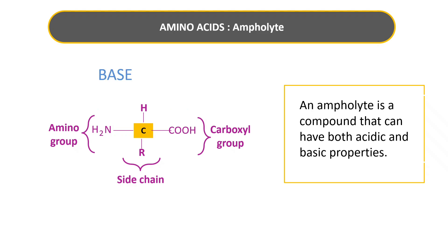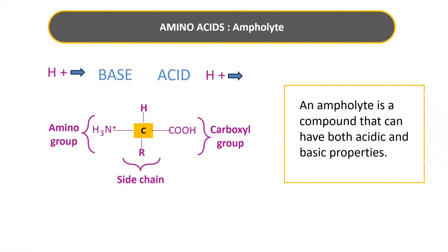A base is a molecule that accepts a proton, that is an H+ ion. Being basic in nature, the amino group of amino acid has a tendency to accept H+ ion and becomes NH3+. And an acid is a molecule that donates a proton, so the carboxyl group of amino acid has a tendency to donate H+ ion and become COO−.